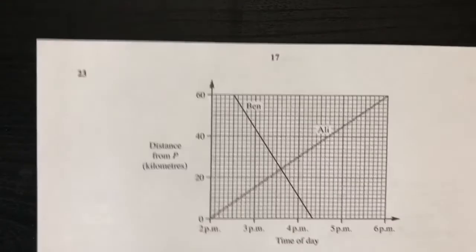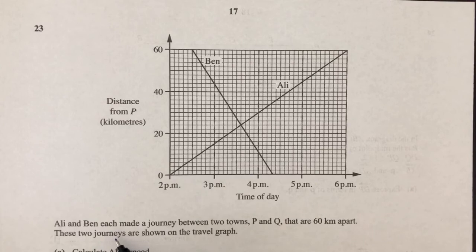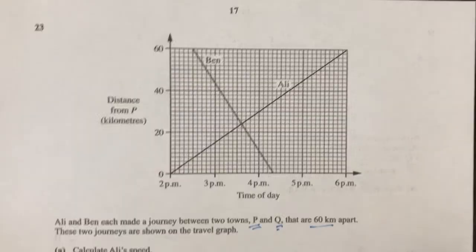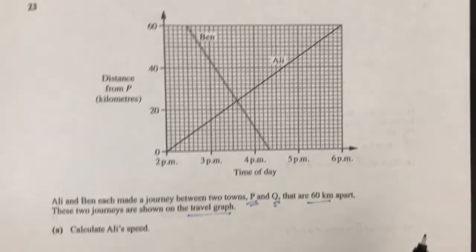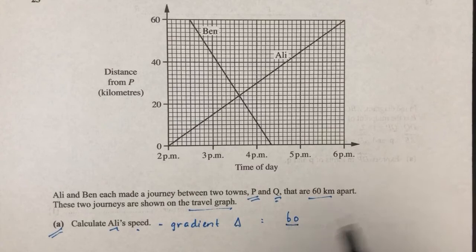Question number 23: Ali and Ben each made a journey between towns P and Q, which are 60 km apart. For part A, calculate Ali's speed. On a distance-time graph, speed equals the gradient. The height is 60 km and the base is 4 hours, so Ali's speed is 60 divided by 4 equals 15 km per hour.